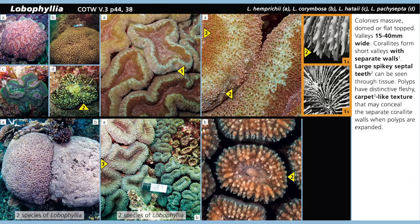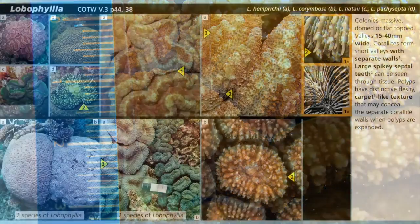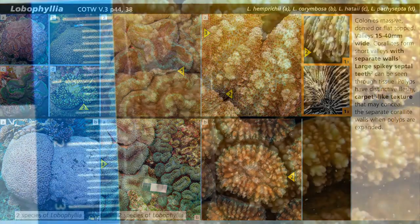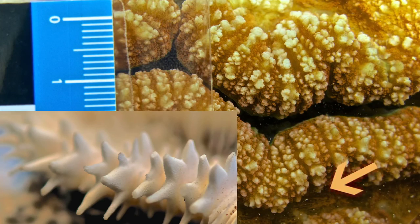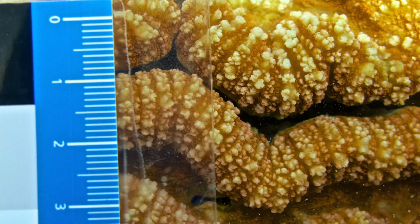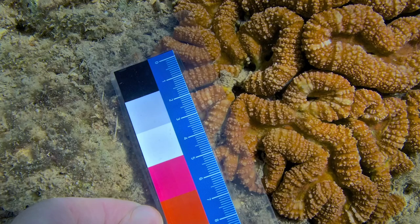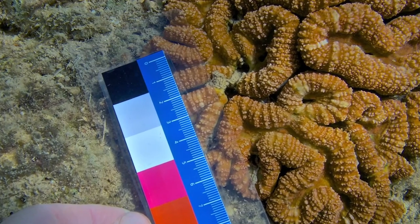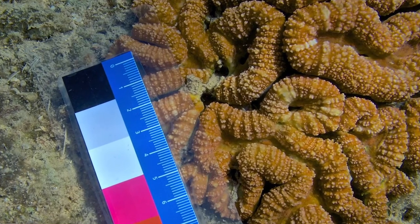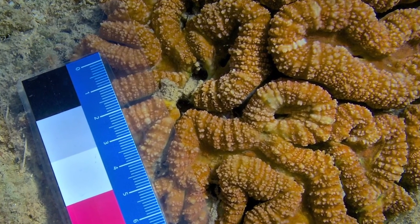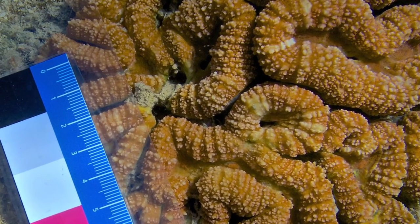Visually, we have a good candidate. Now it's time to confirm the key features bolded in the text description. We have already checked for separate walls and correct scale. Now we need to confirm that the polyps have a fleshy, carpet-like texture — check. With large, spiky septal teeth that can be seen through the tissue — check again. Now you can look it up in Corals of the World and get a feeling for what species you have. One final point: you will note that the Coral Finder's description made no mention of this coral's fetching orange-brown color. That's because color is rarely a reliable character for field identification, but if it is, the Coral Finder will tell you. See you in the next movie.